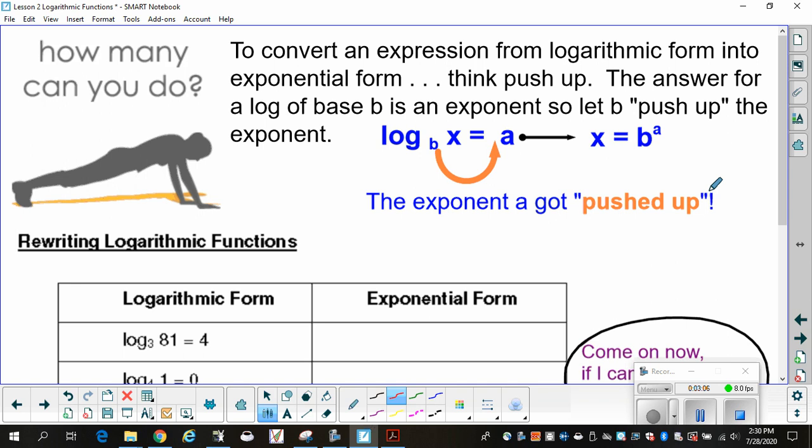Now, sometimes it can help a lot to go back to something that you're used to. In this case, exponential form. So, to convert an expression from logarithmic form into exponential form, we exponentiate both sides. That's the official mathematical term. It's a big word. And I know you can all look at me and go, what? Exponentiate? Don't know what it means. Well, I came up with a different word. The answer for log base b is an exponent. So, let b push up the exponent. Here's my base. If I want to rewrite it as an exponential, I'm going to let the base run underneath the equals. And when it comes up the other side, it's going to push the a up so the a becomes an exponent. So, x is equal to b to the a.